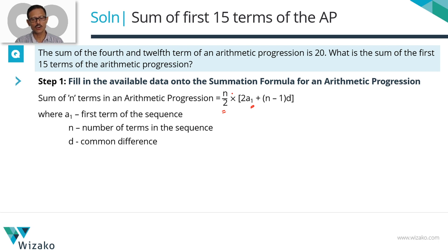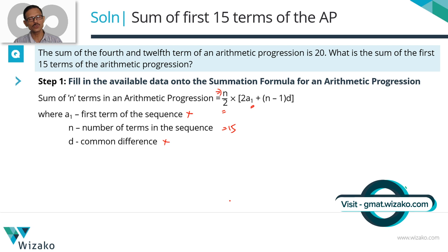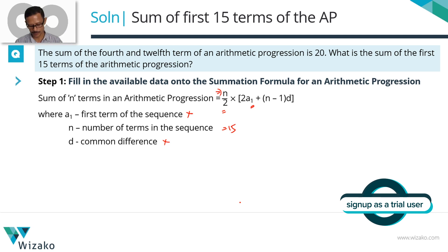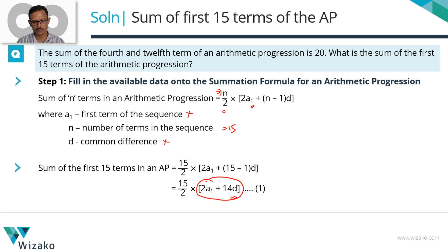From the information we have, all we know is that we are finding the sum of the first 15 terms, so n equals 15. We do not have data about the first term, neither do we have information about the common difference. Let's plug in n equals 15 into the formula. The sum of the first 15 terms works out to 15 by 2 times 2A1 plus 14d. So if we have the value for 2A1 plus 14d, we have the answer.